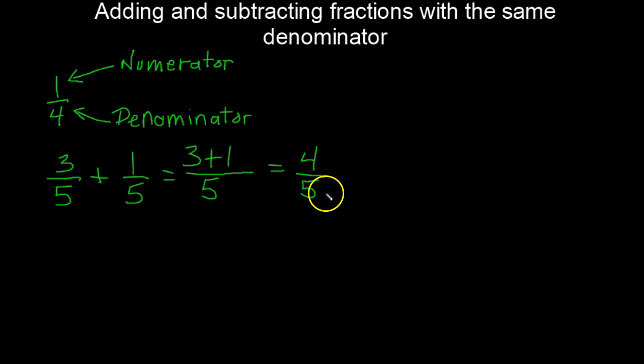Let's suppose we have two sixths plus three sixths. It's going to be two plus three over six, which gives us five sixths. Again, we can't reduce or simplify this.